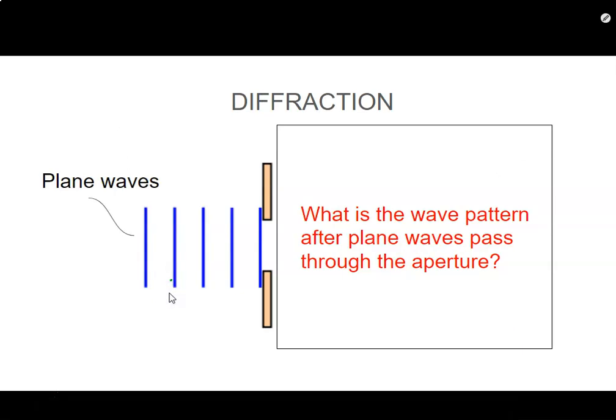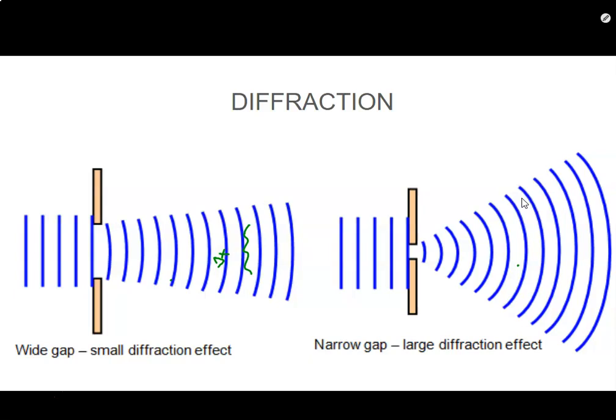So we've got plane waves coming in. We have a slit of a particular width and I'm going to call that delta x as opposed to d now. And we know that what happens is when we pass through we're going to get a diffraction pattern. Now let's take a look at different diffraction patterns. If we have a wide gap, we're not going to get a whole lot of diffraction. In other words, if the gap is much larger than the wavelength, we don't get a lot. And if the gap is smaller or on the order of magnitude of the wavelength, then you're going to get pronounced diffraction.